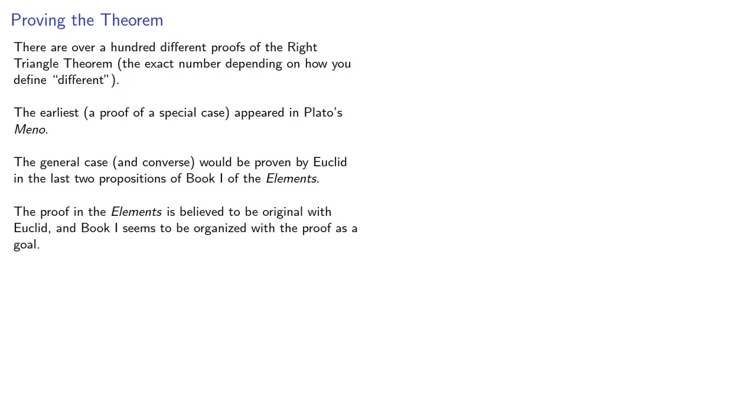The proof in the Elements is believed to be original with Euclid, and Book 1 seems to be organized with the proof as a goal.